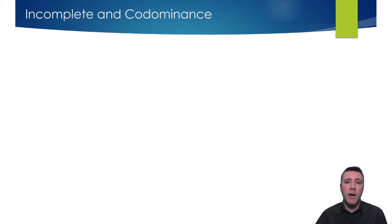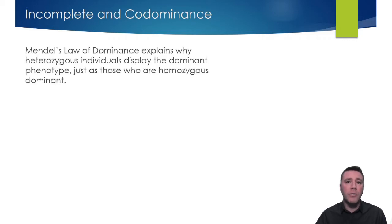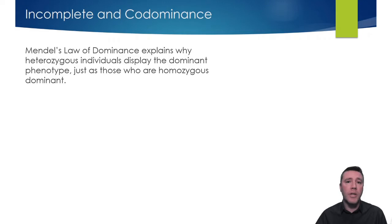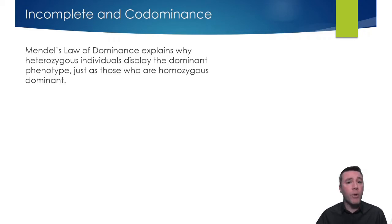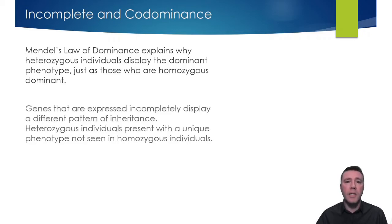Mendel's law of dominance states that individuals who've received two different alleles for a given trait will display the dominant phenotype. Those individuals that are heterozygous and those that are homozygous dominant have the same phenotype, since the dominant allele effectively masks the recessive one so that it is not expressed in the phenotype. Only individuals with two recessive alleles, homozygous recessive, will present the recessive phenotype. But what possible phenotypes result when, for a given trait, there is no truly dominant allele?